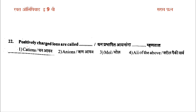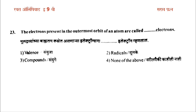The second question is: positively charged ions are called cations. The number of valence electrons are called valence electrons.